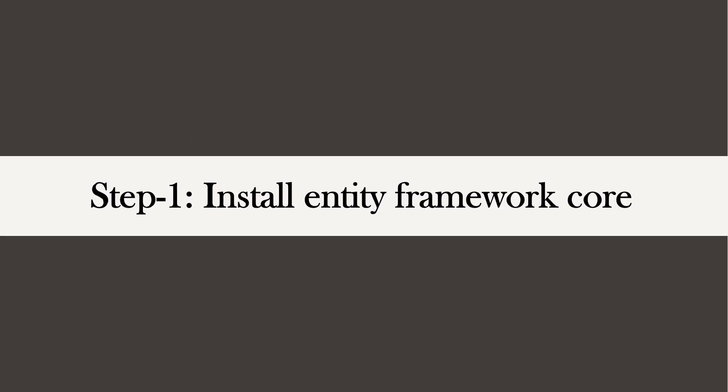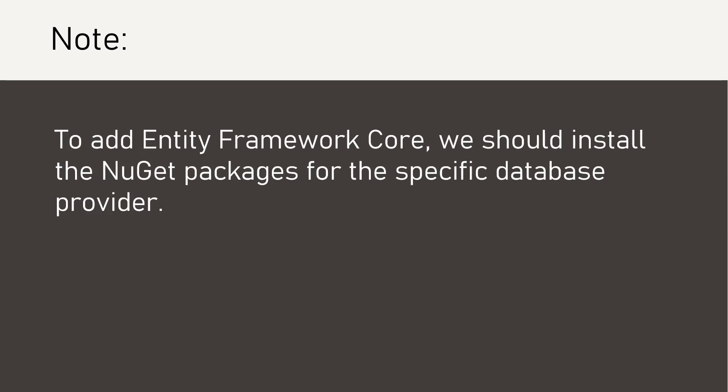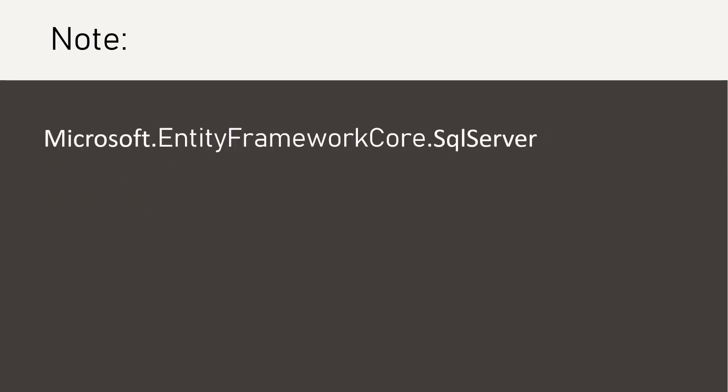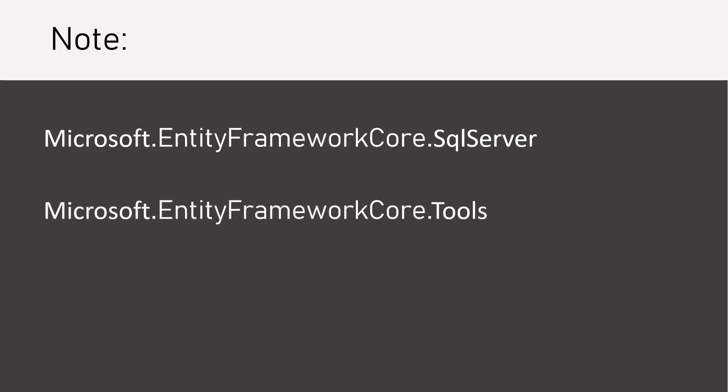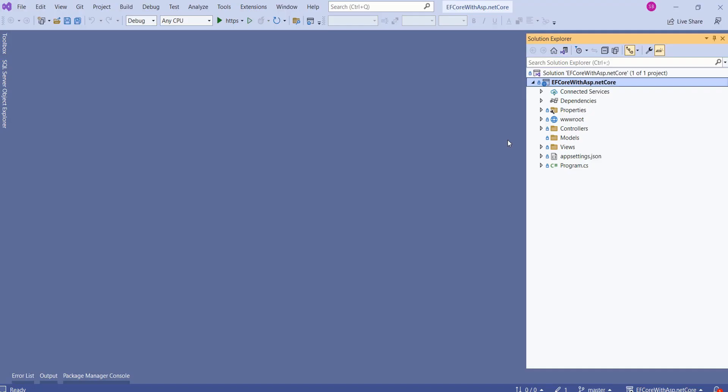Let's start with our first step: installing Entity Framework Core. To add Entity Framework Core, we should install the NuGet packages for the specific database provider. We are going to install the Microsoft.EntityFrameworkCore.SqlServer package because SQL Server is our database. We are also going to install Microsoft.EntityFrameworkCore.Tools, which will help us work with Entity Framework Core.